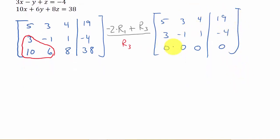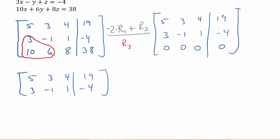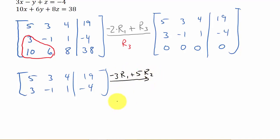Since row 3 went to all zeros, I'm going to rewrite the matrix without it. Now I just have two rows. What I want to do next is get zeros everywhere I can. I want to get this 3 in row 2 to go to zero. To do that I would do negative 3 times row 1 plus 5 times row 2, and then replace row 2.